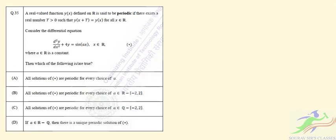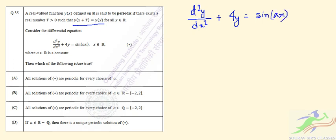Question 35: a real-valued function y(x) defined on R is said to be periodic if there exists a real number T > 0 such that y(x + T) = y(x). Consider the differential equation d²y/dx² + 4y = sin(ax).